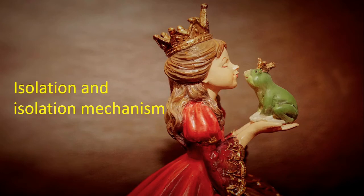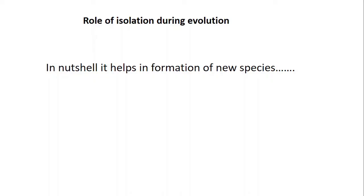Hello Learners! In this video we will talk about how isolation and isolating mechanisms work. Basically, species-specific characters of a newly emerged race or species are maintained by reproductive isolation. There are many types of isolation such as geographical isolation, behavioral isolation, and others. During the process of speciation, the diverging population must acquire some means of isolation so that genes from one gene pool are prevented from mixing into a foreign gene pool. Gene pool is the total of all genes present in a population. Isolation helps in the formation of new species.